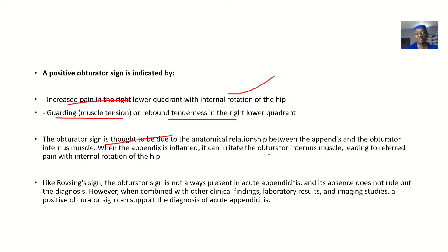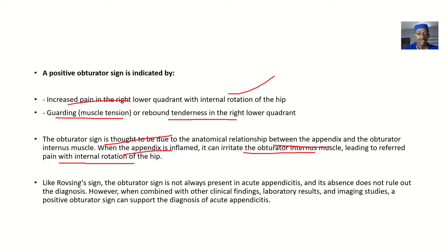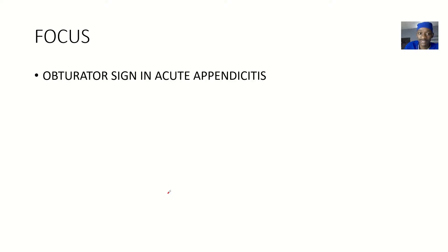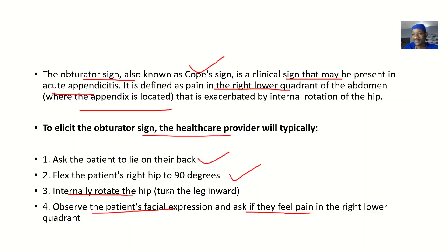The obturator sign is thought to be due to the anatomical relationship between the appendix and the obturator internus muscle. When the appendix is inflamed, it irritates the obturator internus muscle, leading to pain with internal rotation of the hip. Just like the rovsing sign, the obturator sign is not always present in acute appendicitis — its absence does not rule out the diagnosis. So even if the sign is negative, you continue with other diagnostic steps.